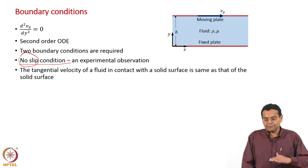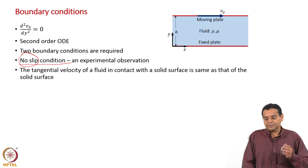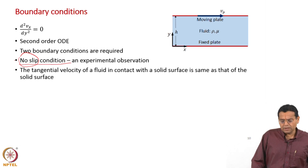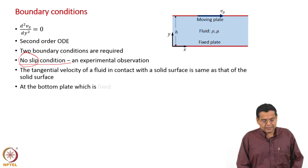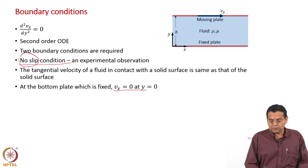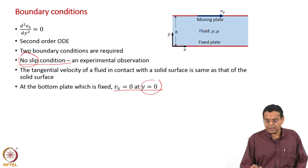To summarize: the no-slip condition means there is no difference or no slip between the velocity of the fluid adjacent to a solid surface. The fluid acquires the same velocity as that of the solid itself. If the solid is stationary, the fluid has no velocity; if it is moving, the fluid also moves along with the same velocity. Now, once this is clear, we can write down the condition for vx at the bottom plate, which is fixed: vx is equal to 0. The value of y here is y equal to 0.